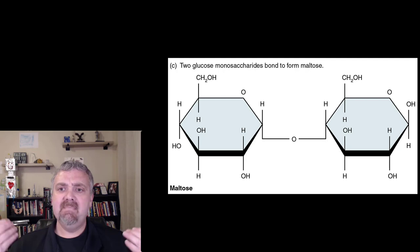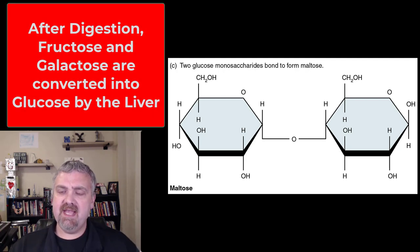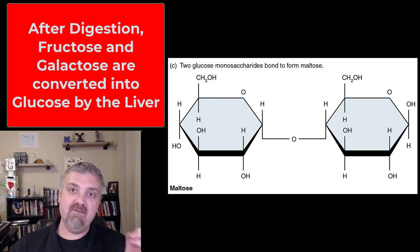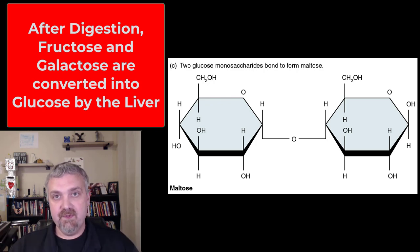So quick reminder, we covered this on the monosaccharide video. The three monosaccharides are glucose, fructose, and galactose. But glucose is the only one your body can use for fuel. So when you break maltose down, you now have two glucoses that can be used for fuel. When you break lactose down, you have a glucose and a galactose, and that galactose will have to be converted to glucose by the liver. Same thing with sucrose. When you break sucrose down, you have a glucose and a fructose. That fructose will have to be converted to glucose in the liver.